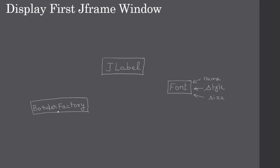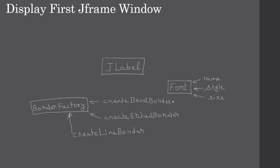For example, when you call createEtchedBorder, the BorderFactory will create the etched border and return it to you. You can also make calls to createEtchedBorder, createBevelBorder, or createLineBorder. Ultimately the goal of BorderFactory is to generate borders.